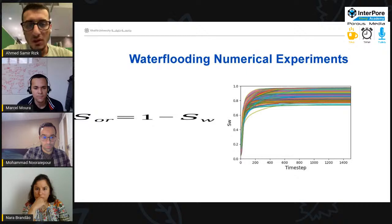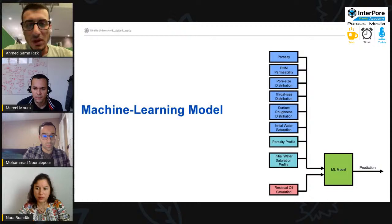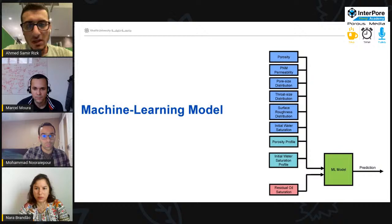All of these parameters are passed through a machine learning model for training and testing. The first parameter is, as we said, porosity. Then we have the PNM permeability, the pore size distribution, throat size distribution. We have the surface roughness, initial water saturation. We have the porosity profile and the initial water saturation profile as well. As well as the corresponding residual oil saturation for each sample.